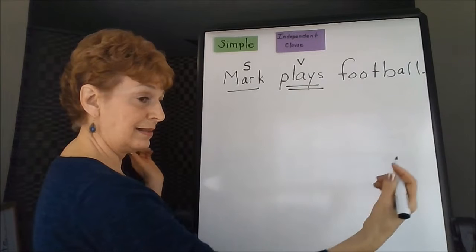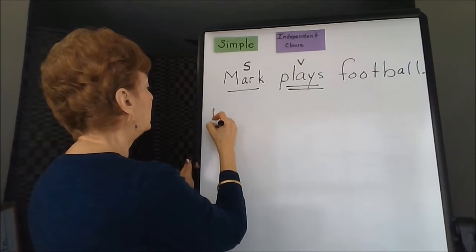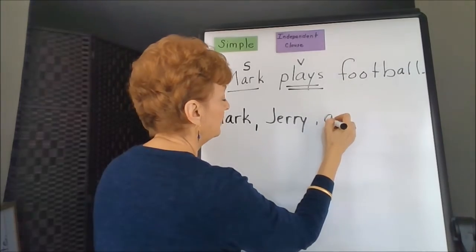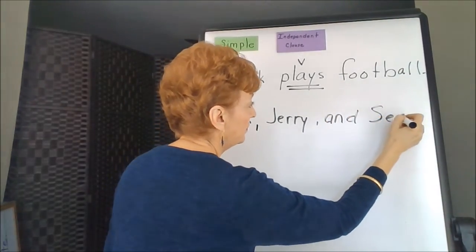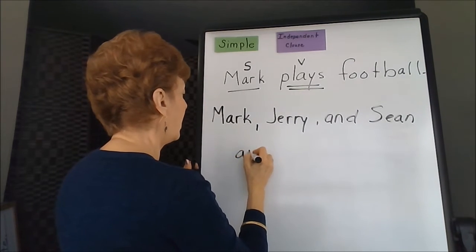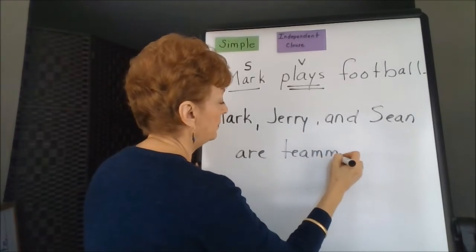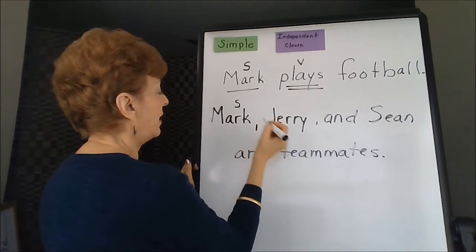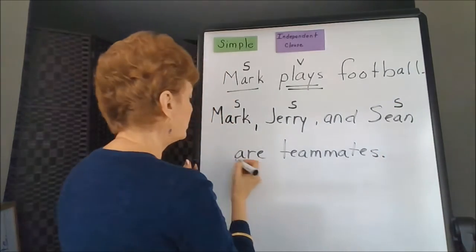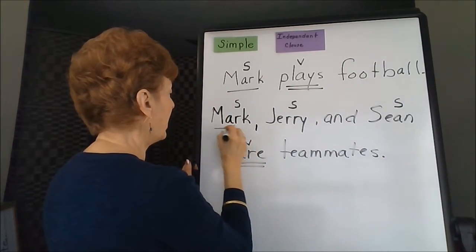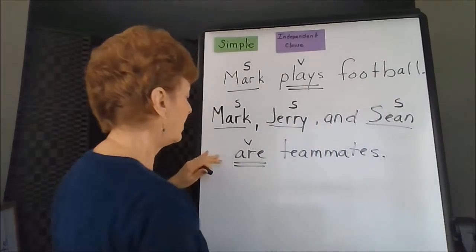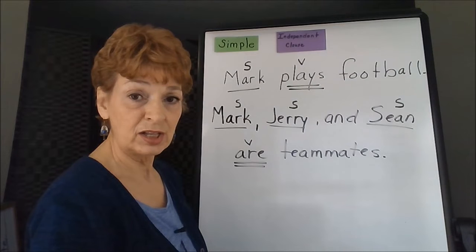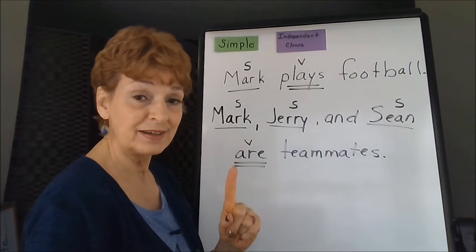You could expand this simple sentence structure with these additions. For example: Mark, Jerry, and Shawn are teammates. Here we have a subject — Mark, Jerry, and Shawn — sharing the state of being verb, are. It's still a simple sentence structure, because simple sentences use one independent clause, and a clause has to have at least one subject coupled with one verb.